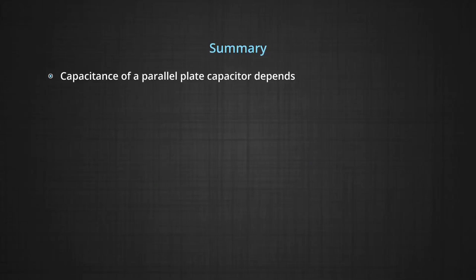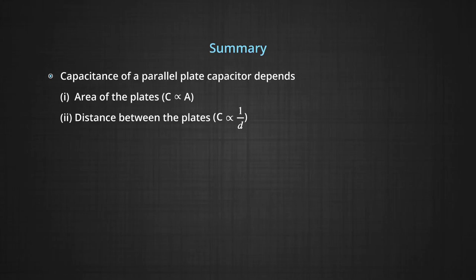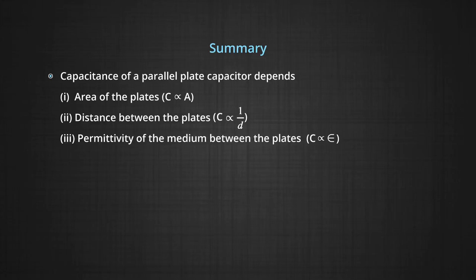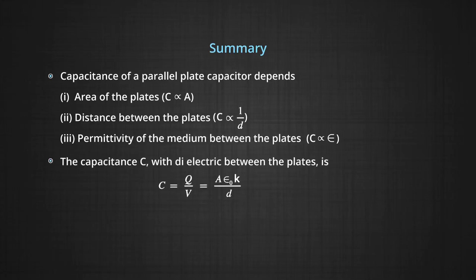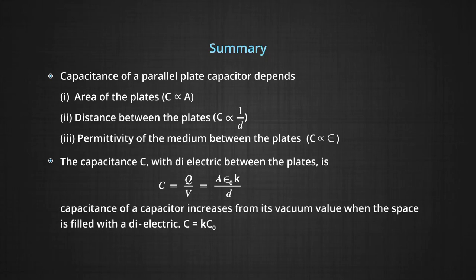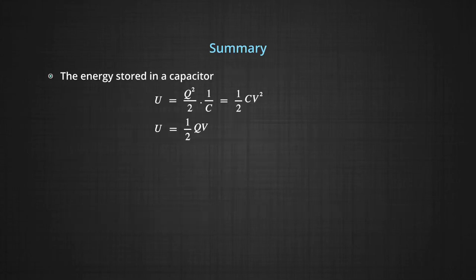Now, let us summarize what we have studied so far. Capacitance of a parallel plate capacitor depends upon: number one, the area of the plates, and it is directly proportional to area; number two, the distance between the plates, and it is inversely proportional to the distance between the plates; point three, it depends upon permittivity of the medium filling the gap between the plates, and it is directly proportional to the permittivity of the medium. The capacitance C with dielectric between the plates is given by A epsilon naught K by D. Capacitance of a capacitor increases from its vacuum value to a value equal to K times C₀. The energy stored in a capacitor is given by U equal to half Q² by C, equal to half CV², which is also equal to half Q times V. Using all these formulas, we can also solve some numerical problems. Thank you.